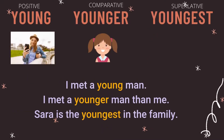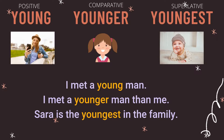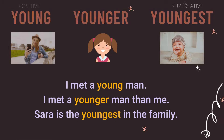The last one-syllable word is 'young'. For positive: young. For comparative: younger. For superlative: youngest. In a sentence — I met a young man; I met a younger man than me; Sarah is the youngest in the family.